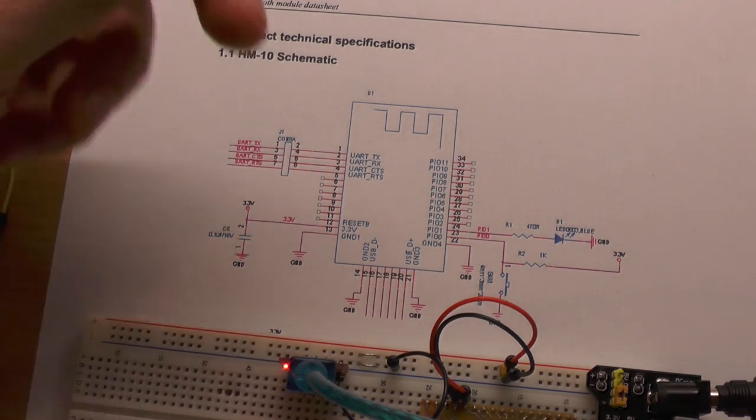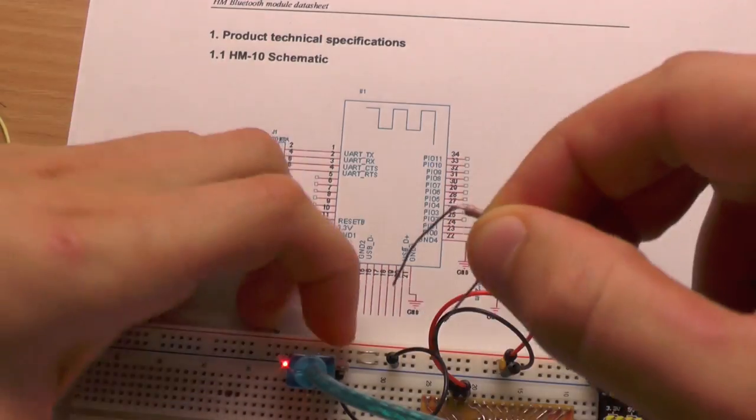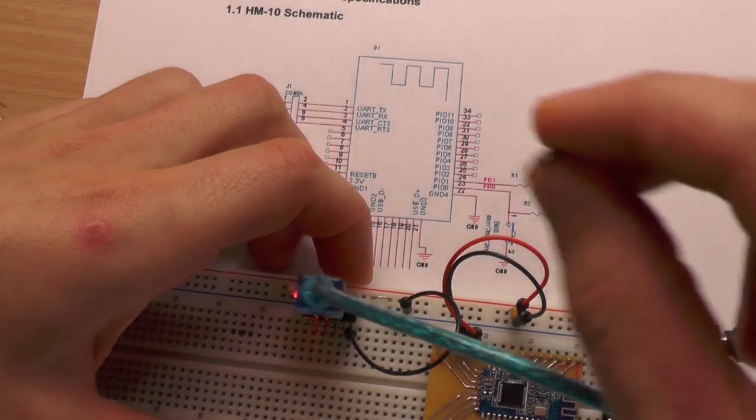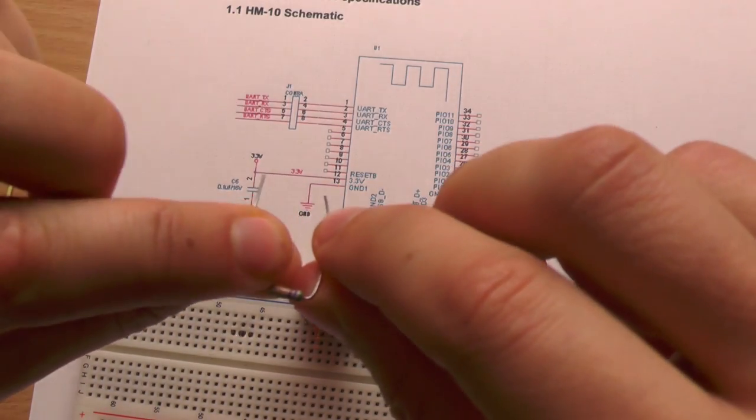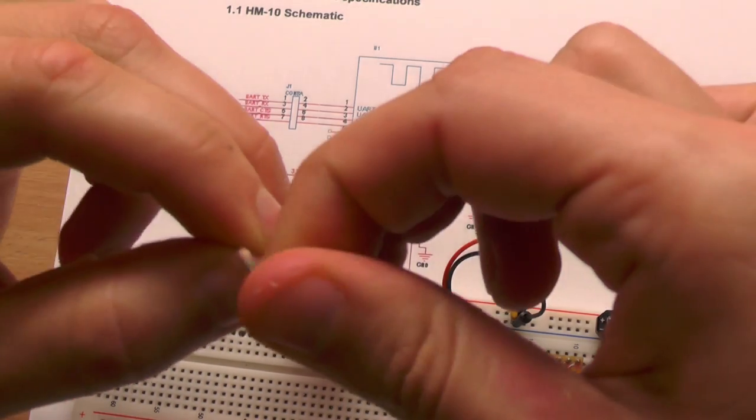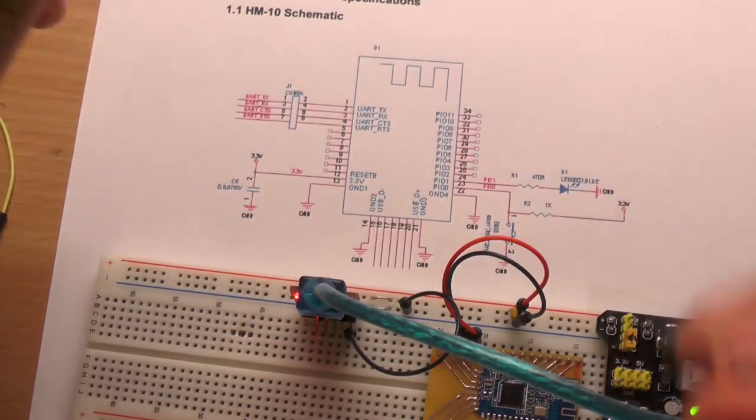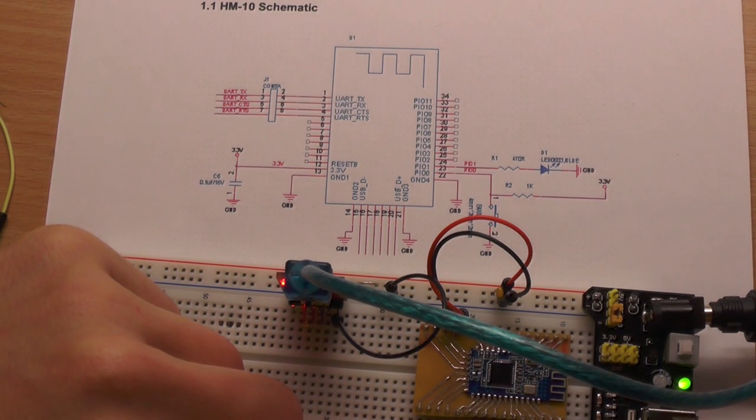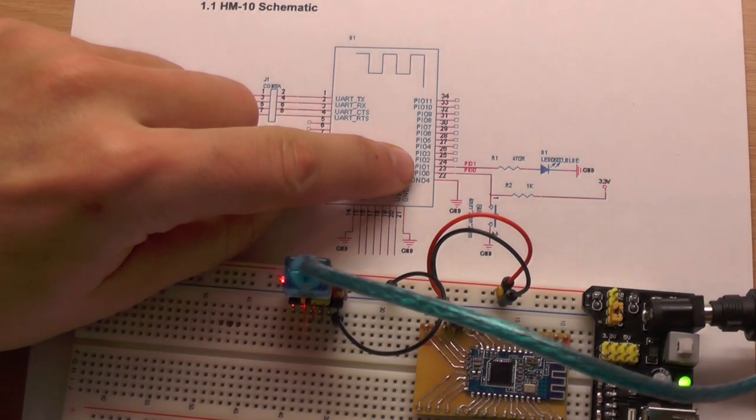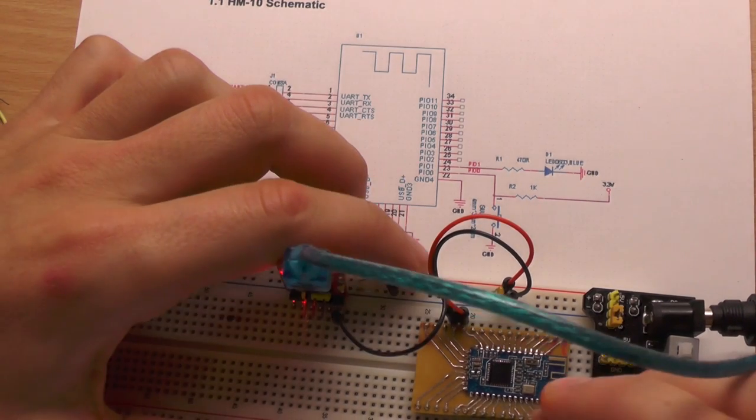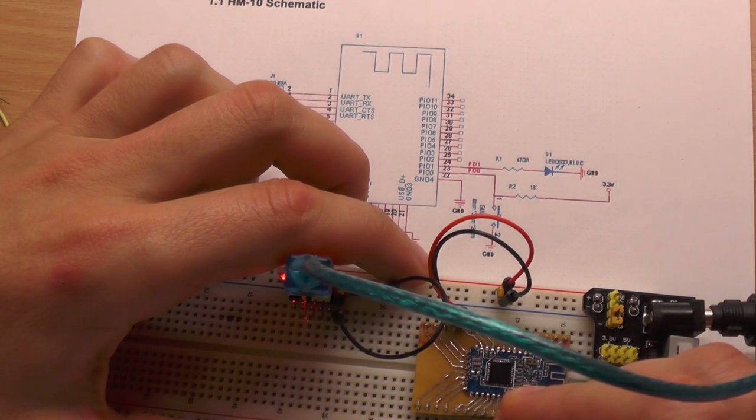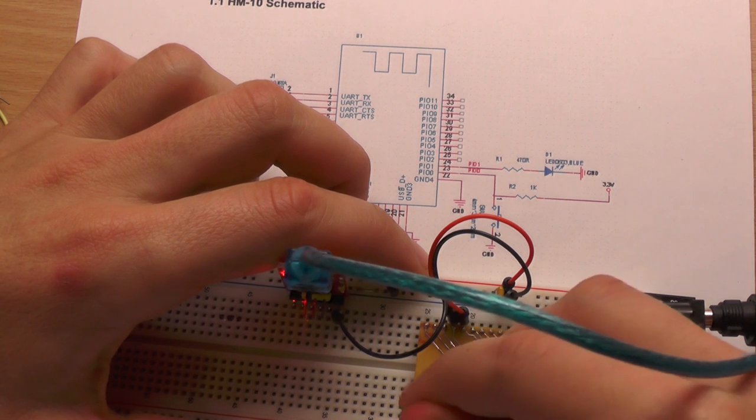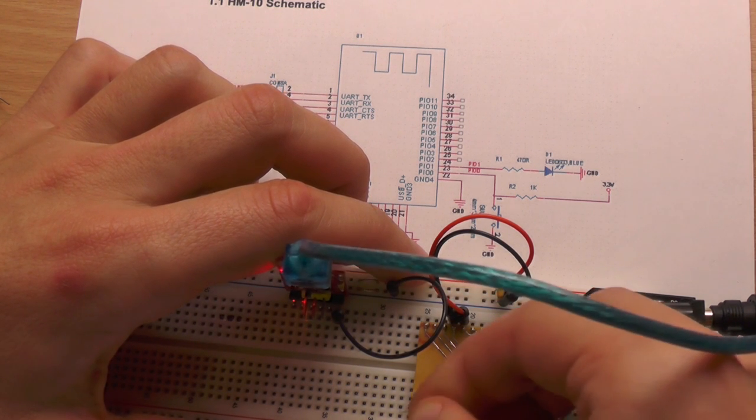So we just take this resistor here, I don't know what actual resistance it has but I think it was around 600, it doesn't really matter unless it's not too low. Then third from the bottom, that is this one, and I will place it just over here.